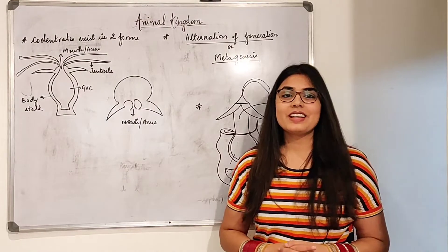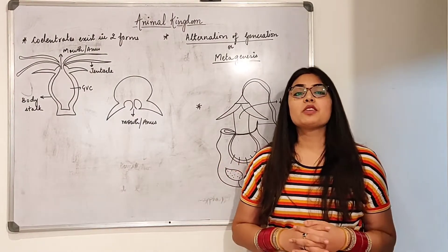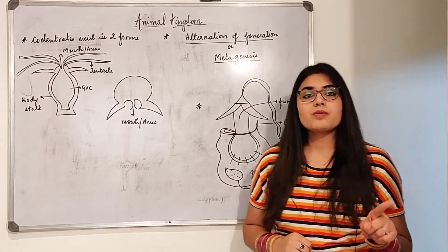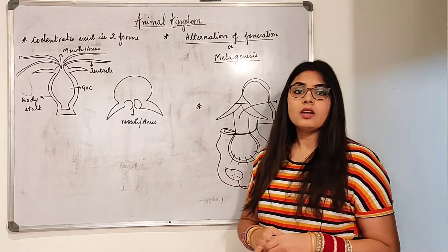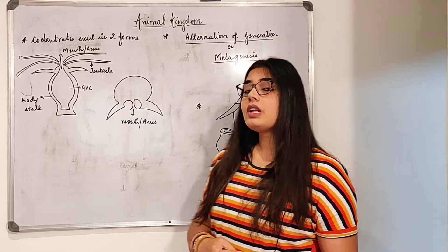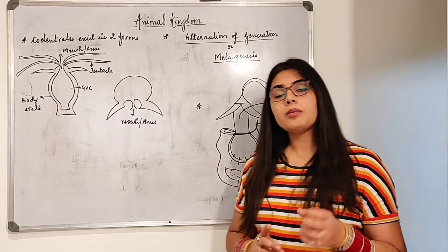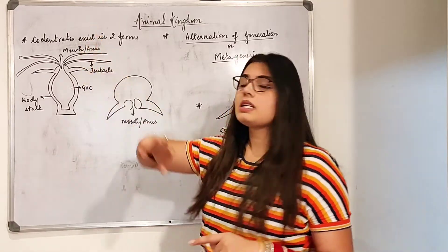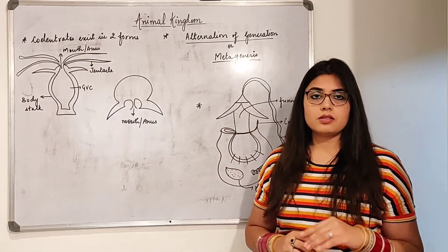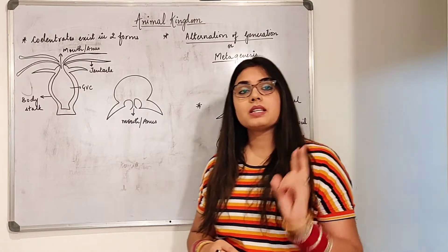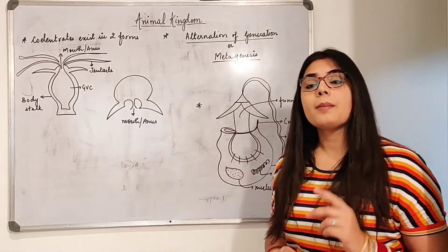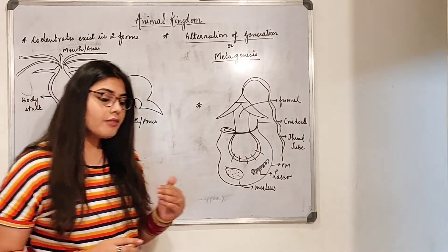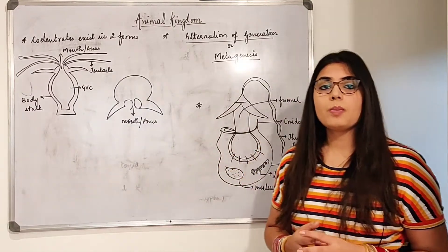Welcome back to the channel. In this video we will be moving forward to the next topic of phylum Cnidaria, also known as Coelenterata. We'll be focusing on two to three small topics: first, the two forms in which Cnidaria exist; then metagenesis, that is the alternation of generation; and after that, the structure of the nidoblast or cnidocyte cells in more detail.